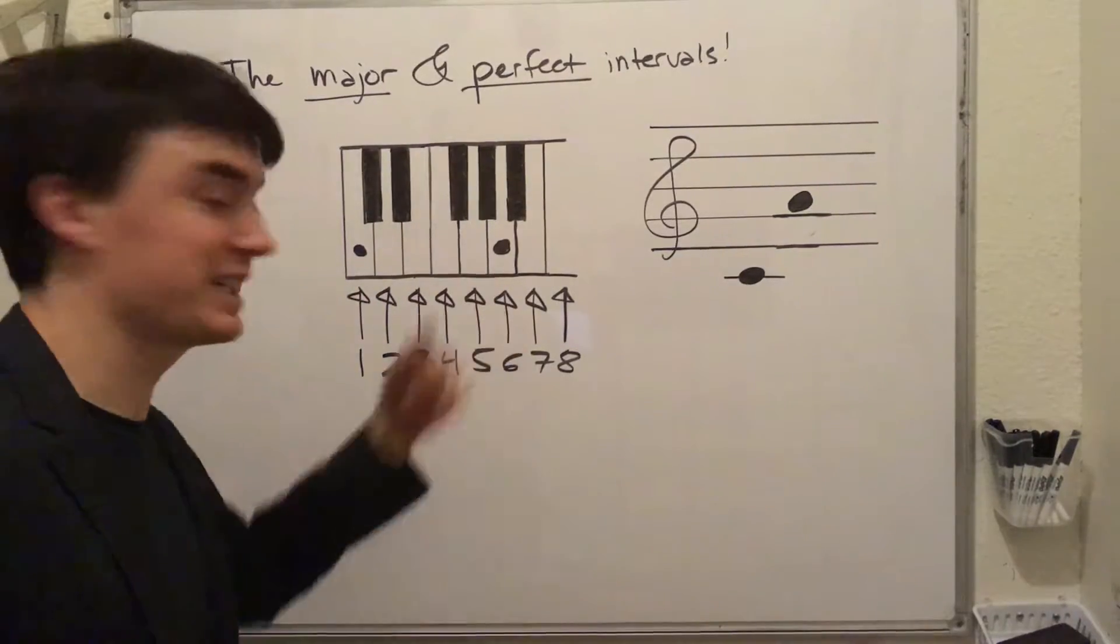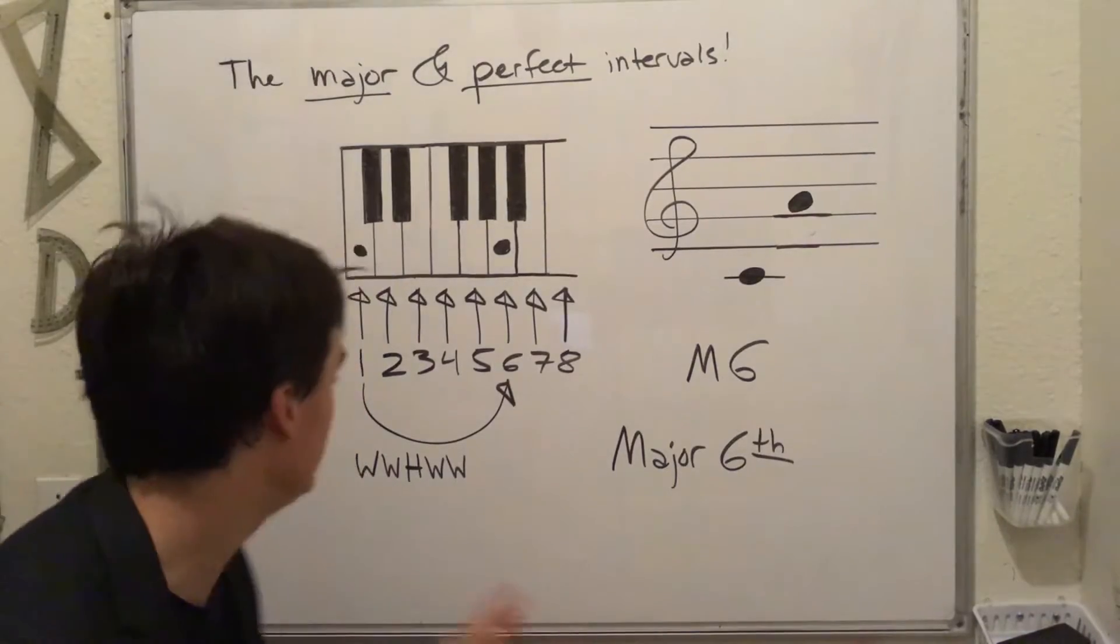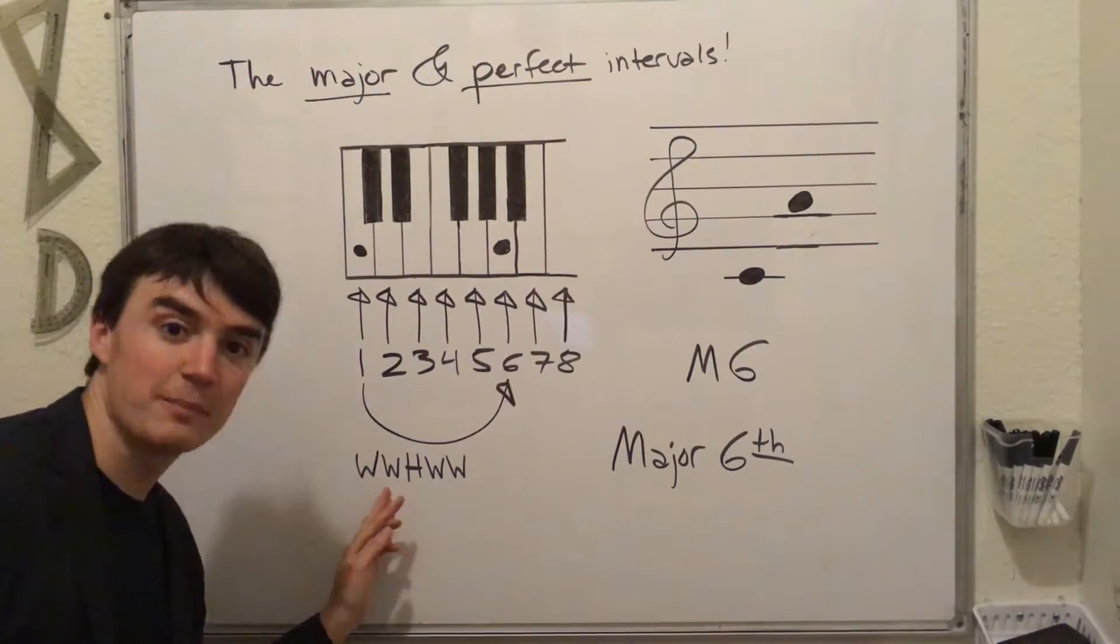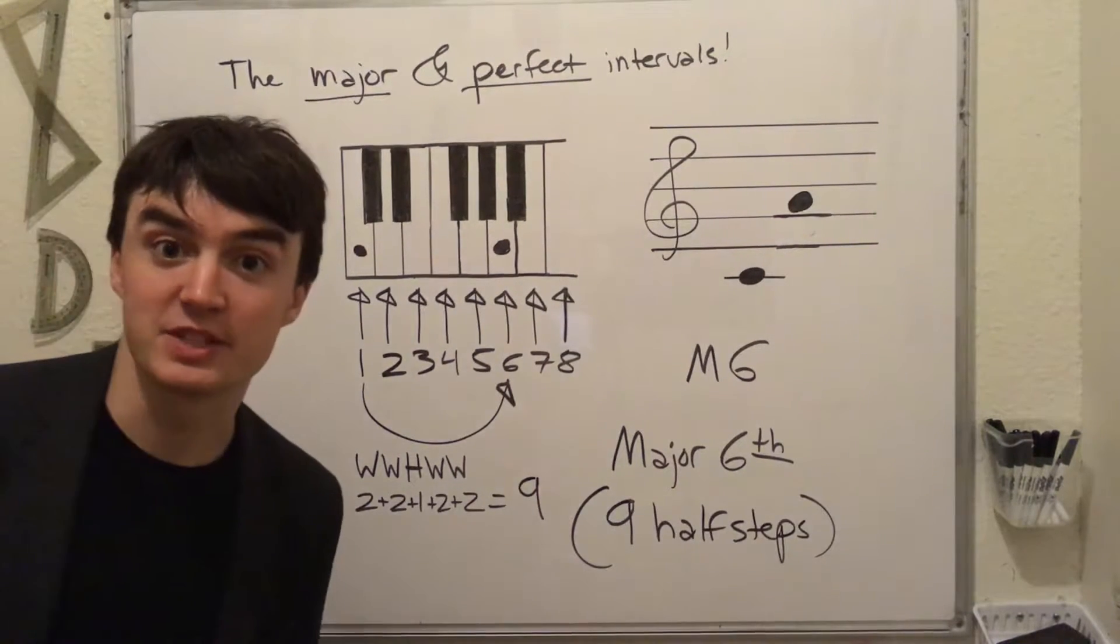Now we have 1 to 6. And the sixth happens to be major. To get to the sixth, we need to go a whole step, a whole step, a half step, a whole step, and a whole step. Nine half steps to get there from the tonic.